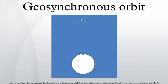A semi-synchronous orbit has an orbital period of one half sidereal day, i.e., 11 hours 58 minutes. Relative to the Earth's surface it is twice this period, and hence appears to go around the Earth once every day. Examples include the Molniya orbit and the orbits of the satellites in the global positioning system.